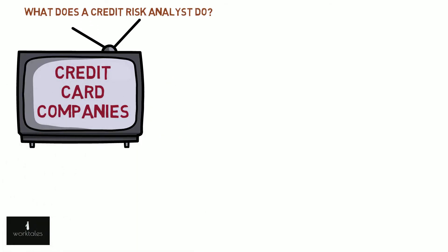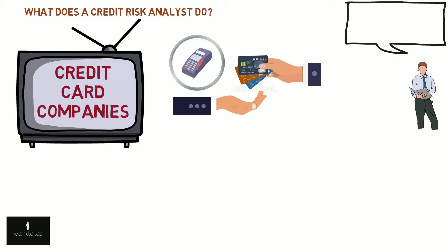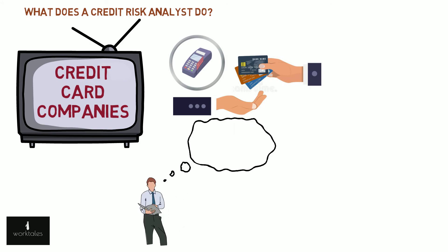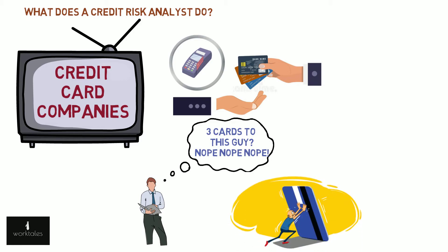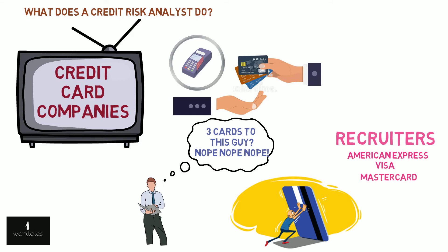Credit card companies also employ analysts, usually with the title credit and fraud risk analysts. These analysts look at the transactions and payment history of credit card customers and assign them into buckets. Customers with low credit worthiness are flagged and sent to the team directly interacting with the card holders. These analysts also try to predict the number of defaults — meaning missed payments — given a certain amount of time, and then compare these results with the actual number of defaults to check the accuracy of their models. Firms that hire include Amex, Visa, and Mastercard, with most profiles in India based in Mumbai and Gurugram.